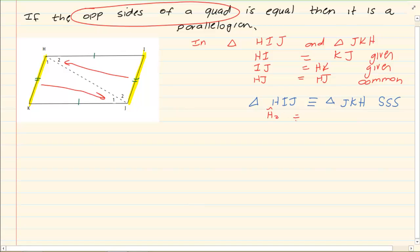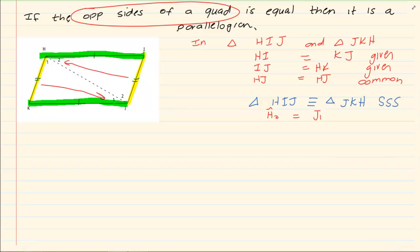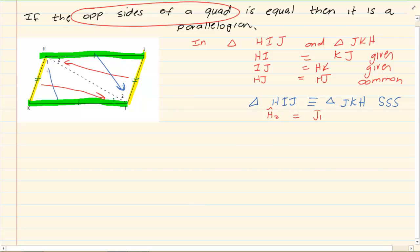So H2 is going to equal to J1. The next angle, let's link it to this side. What side is opposite these angles? HI is with J2 and KJ is with H1. So I know that J2 is going to equal to H1.